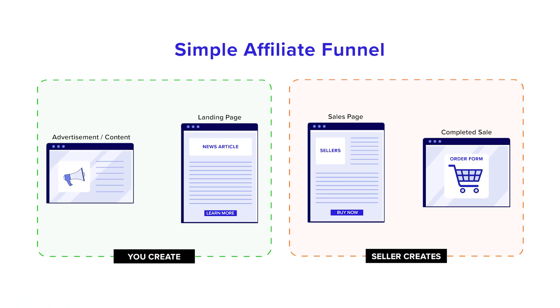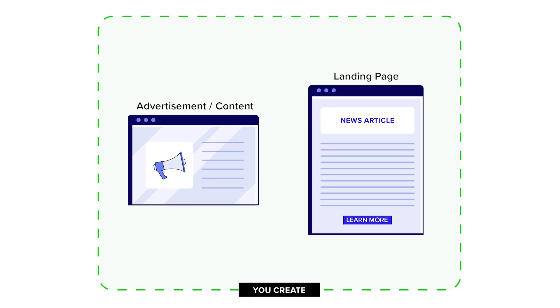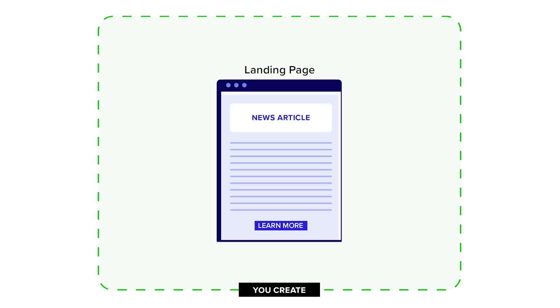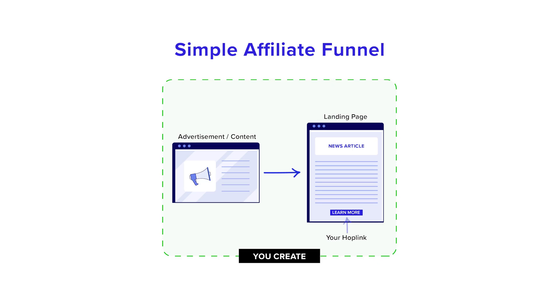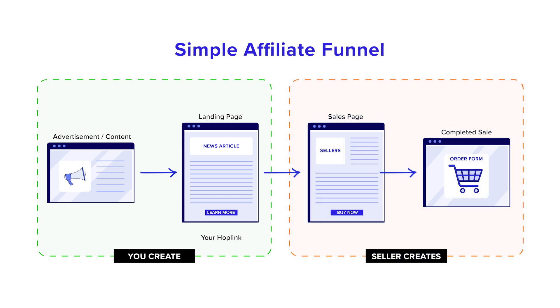Let's take a look at the most basic form of this. This graphic shows a very simple affiliate funnel and all the things you'll be creating inside of it. On the left you'll be creating either an advertisement or a piece of content that gets the customer interested in wanting to learn more about the product you're promoting. Once they click the ad or link, it takes them to your landing page. Your affiliate link goes in the call-to-action button, which takes them to the product sales page where they can purchase and you earn a commission. The only two things you need to create are your content and your landing page — the sellers handle the rest.